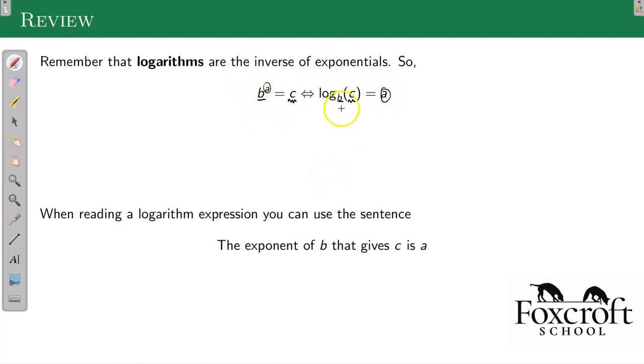And then logs are a bit weird because there's this new thing. So reading a log statement can be a little confusing. One way I like to think about it is the exponent of B that gives C is A. So that's how you can read a log left to right, and that is exactly this. B to the A equals C.